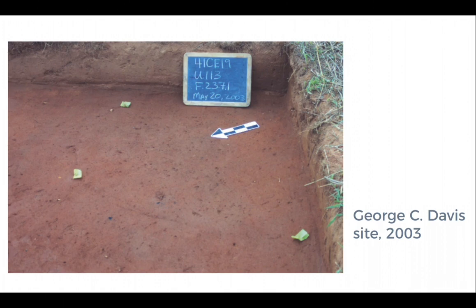It turns out these two archaeologists were actually colorblind. And so even if there was something to see, there was very little that you could discern in the red dirt there. As you can see, this is a site photograph. You have a chalkboard that tells us what the site is, and a north arrow that also doubles as a scale, so we know approximately how big this one is.